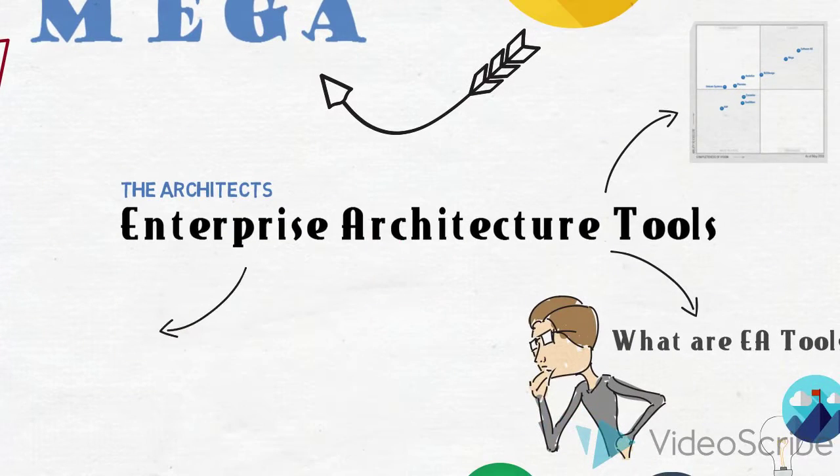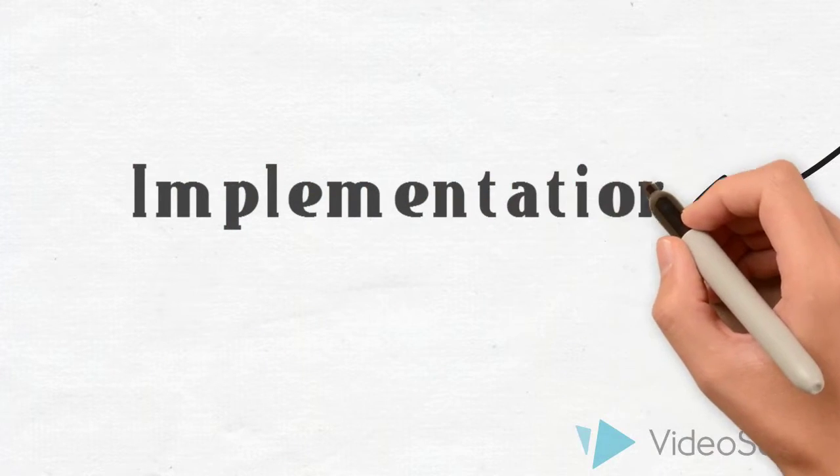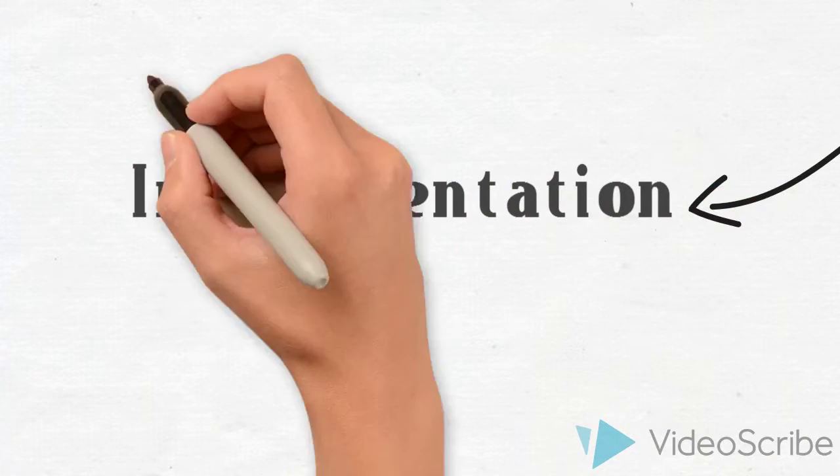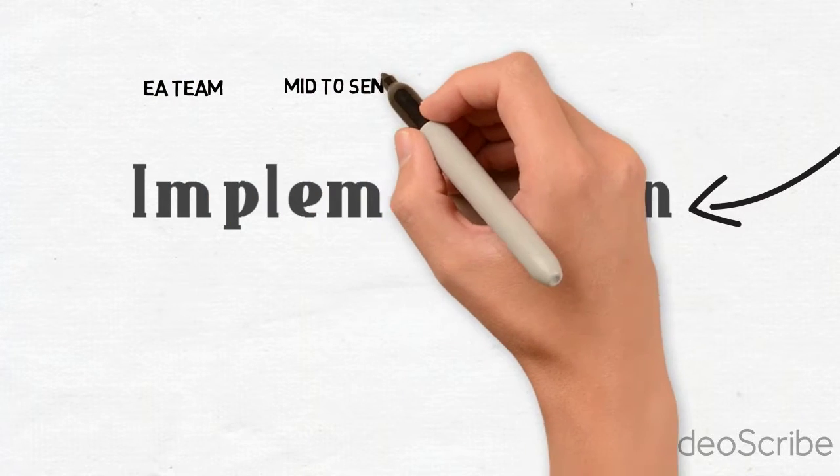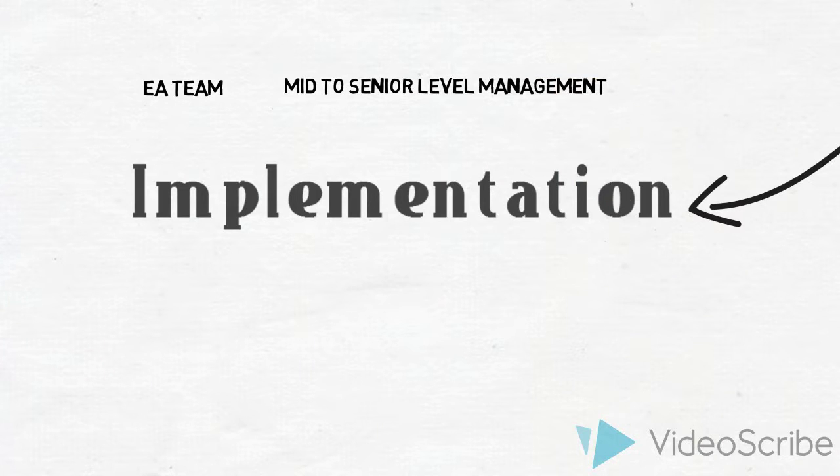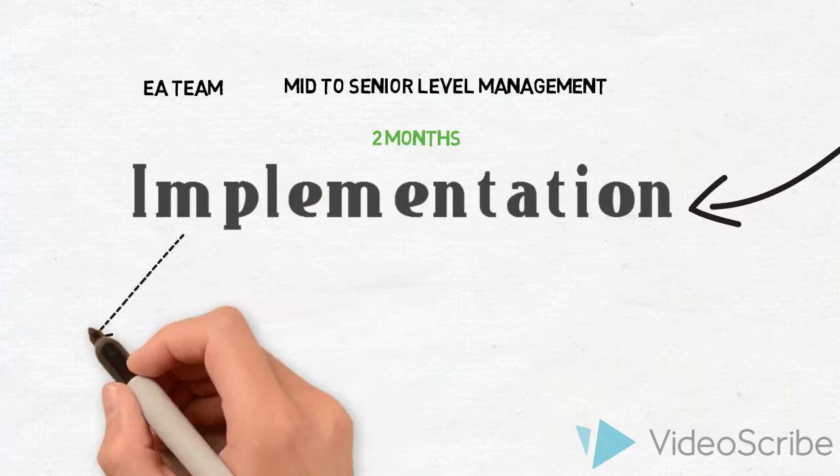Now we'll talk about the implementation plan for the EA tool. We'll involve the EA team as well as mid to senior level management, and the whole implementation plan will take two months to finish. We have three phases: